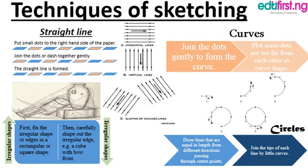Now let's go to the techniques of sketching, starting with the straight line. Put small dots to the right-hand side of the paper, then join the dots or dashes together gently — a straight line is formed. Looking at the diagram, you can see illustrations of vertical lines, horizontal lines, and also sloping or inclined lines.